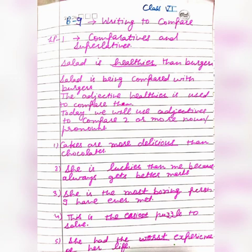Now here are sentences made by comparing three or more nouns. 'She is the most boring person I have ever met' — most boring is the superlative degree of boring. 'This is the easiest puzzle to solve' — easiest is the superlative degree of easy.